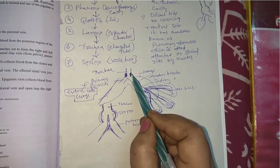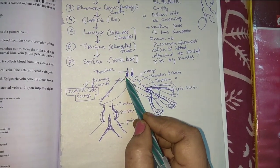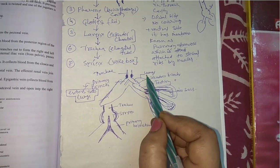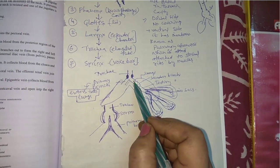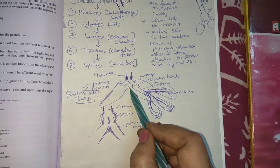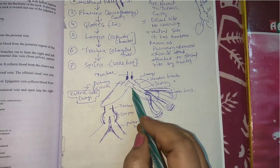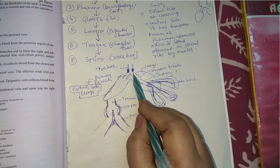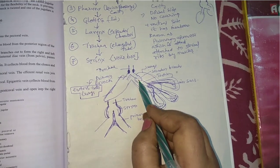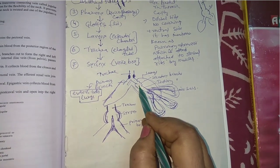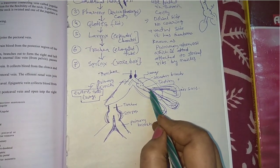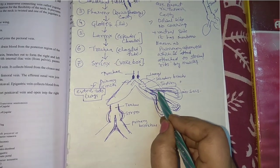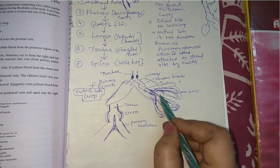After giving the syrinx, the trachea is divided into primary bronchi — right and left primary bronchi. These primary bronchi enter into the lungs. After entering the lungs, the primary bronchi divide into secondary bronchi, and the secondary bronchi again divide into tertiary bronchi. These tertiary bronchi enter into the air sacs.